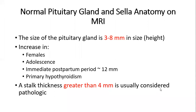The normal pituitary gland size is about 3 to 8 millimeters. It is increased normally in females in adulthood because of gonadotropins. Also, immediately after — in the postpartum period — it can reach about 12 millimeters in height, and primary hypothyroidism also causes an increase. The pituitary stalk is important to know its size. It is normally less than 4 millimeters. A pituitary stalk greater than 4 millimeters is usually considered pathologic.